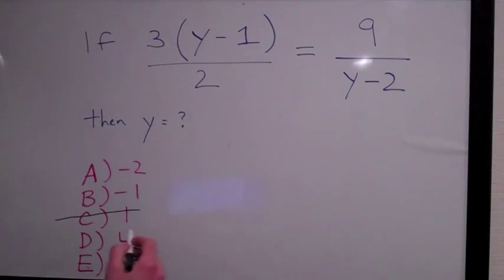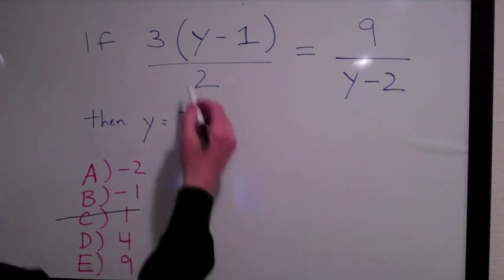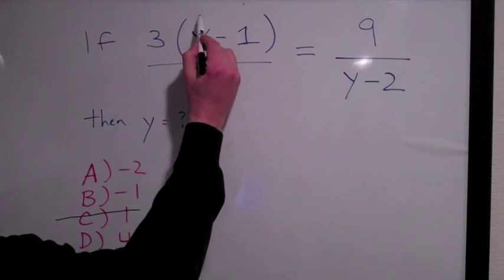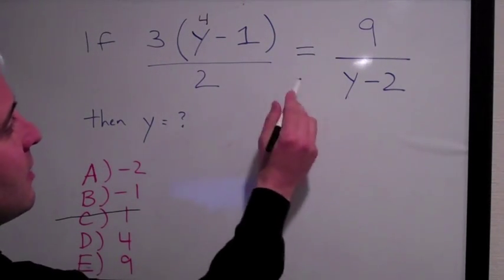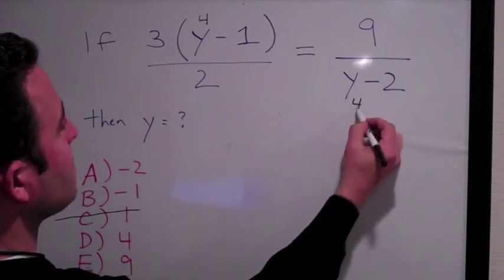Okay, so answer choice C didn't work. So what do you do? Do you go to answer choice B now and try that or do you try answer choice D? I'm going to go to answer choice D because it's easier to plug in the number 4 into the answer choices than it is to plug in negative 1. So if 3 times 4 minus 1 over 2, does that equal 9 over 4 minus 2?